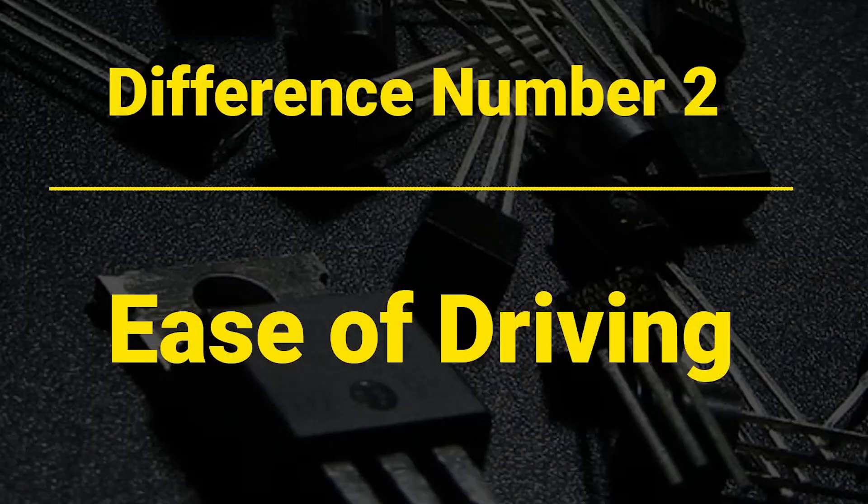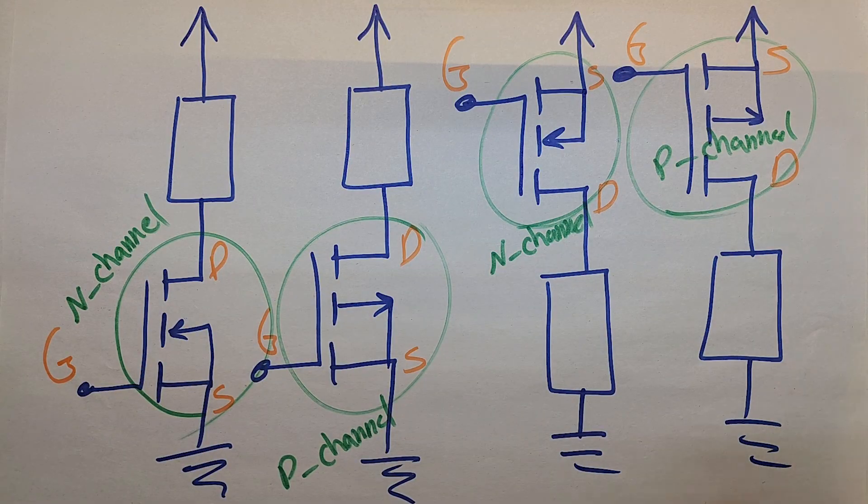Why should you use the N-channel on the ground side and the P-channel on the high side? This is a very good question. The answer leads us to difference number two: ease of driving. Using an N-channel on the ground side is easier than using it on the high side, and similarly, using a P-channel on the high side is much easier than using it on the ground side.